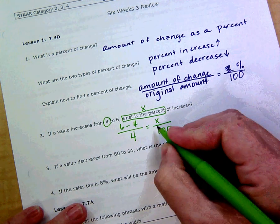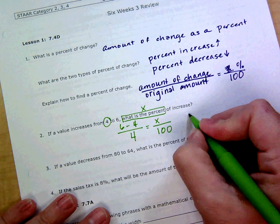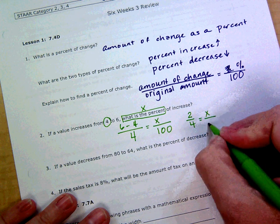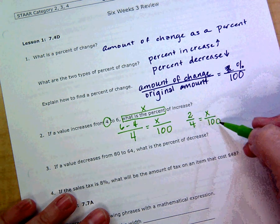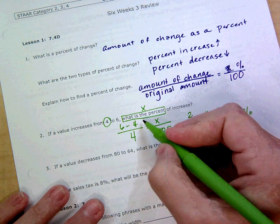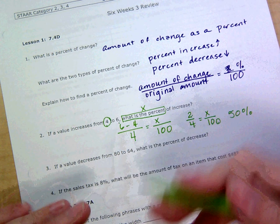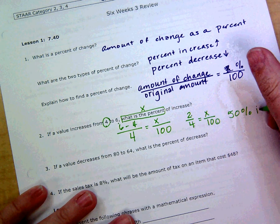Half of 4 is 2, half of 100 is 50, so there's a 50%. It is a percent of increase because it goes from 4 to 6, it's going up, 50% increase.